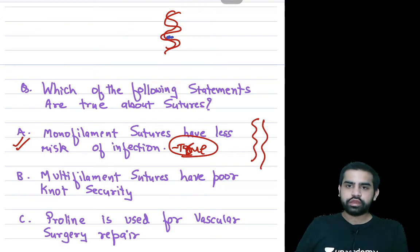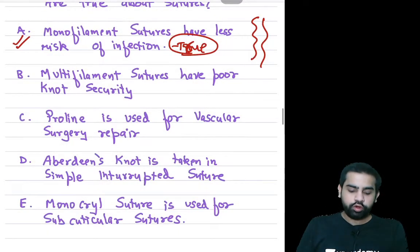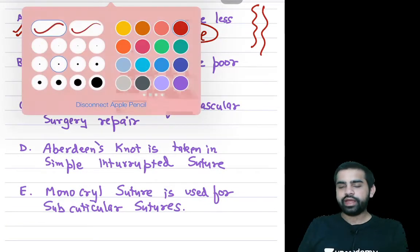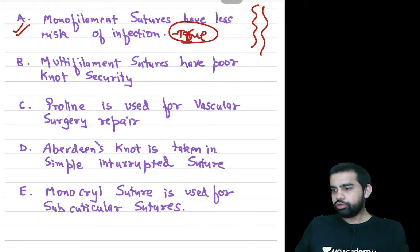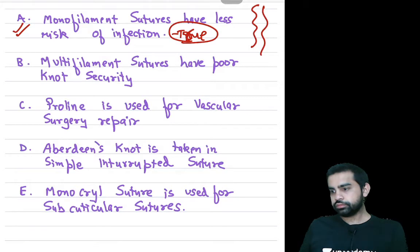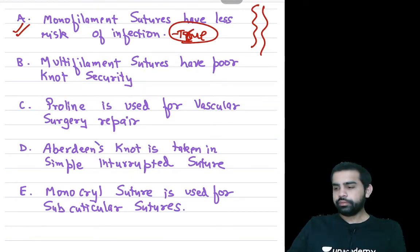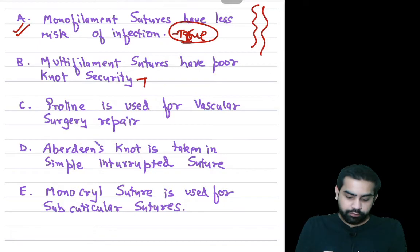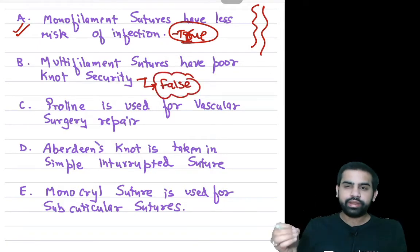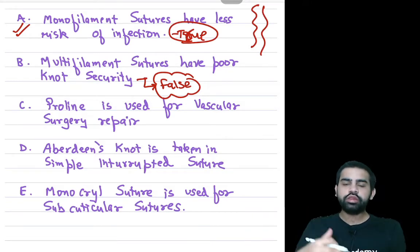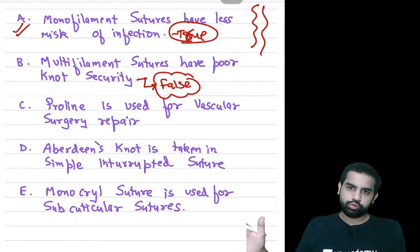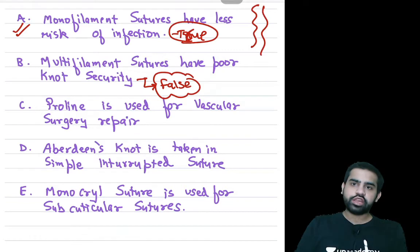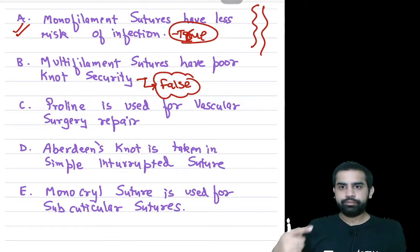Option B: multifilament sutures have poor knot security — this is a false statement. In multifilament sutures, there are multiple filaments so memory is less, and that is why knot security is more. Better knot security is actually an advantage of multifilament sutures compared to monofilament sutures. So: monofilament = less infection risk; multifilament = better knot security.